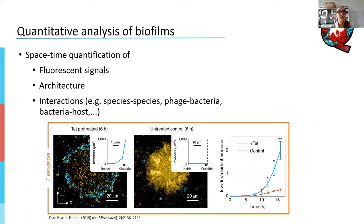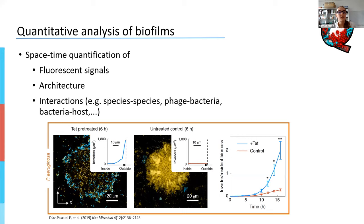Another thing you can quantify with BiofilmQ is looking at interactions between different channels. These channels can represent different species, a host and a biofilm, or phage and bacteria. You can ask how they are acting in relation to each other. In this example, published by a colleague last year, BiofilmQ was used to ask: if biofilms are pre-treated with antibiotics and another strain is then added to the flow chamber, where would these invading cells localize? We used BiofilmQ to find out that these cells localize at the outside of the dying biofilm rather than the inside.